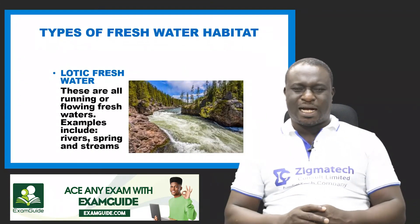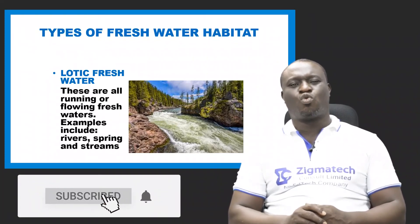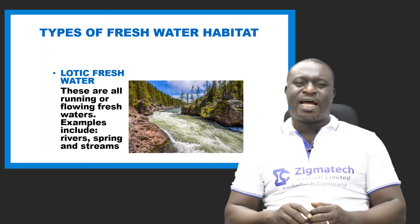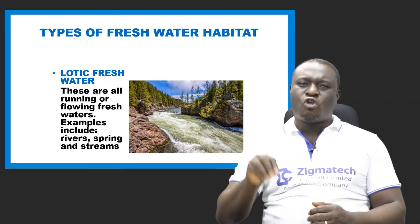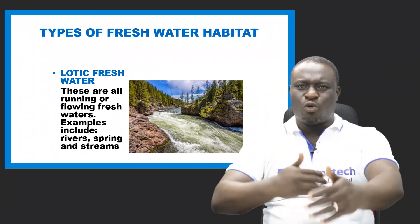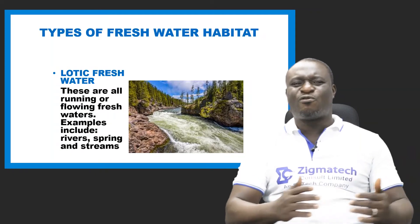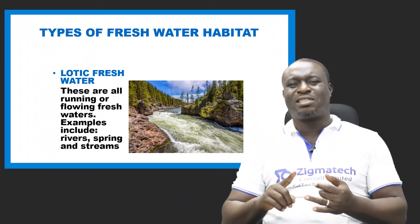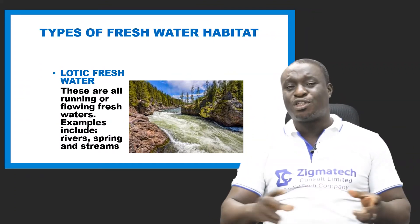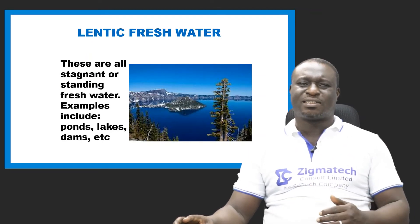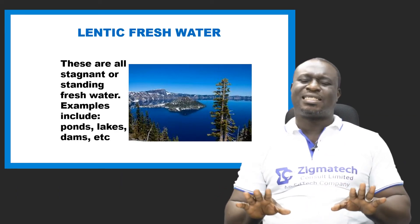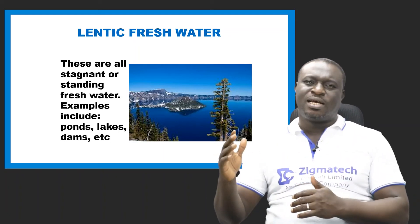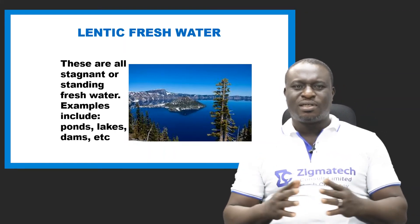We have two types of freshwater habitat. The first is lotic freshwater — all running or flowing fresh water such as rivers, springs, and streams. The second is lentic freshwater habitat — freshwater that is stagnant or standing, not flowing. Examples include ponds, lakes, and dams.